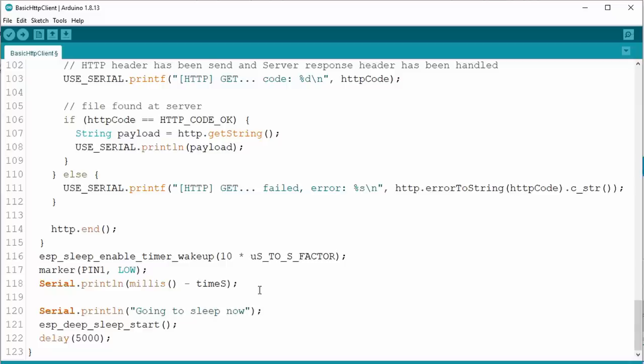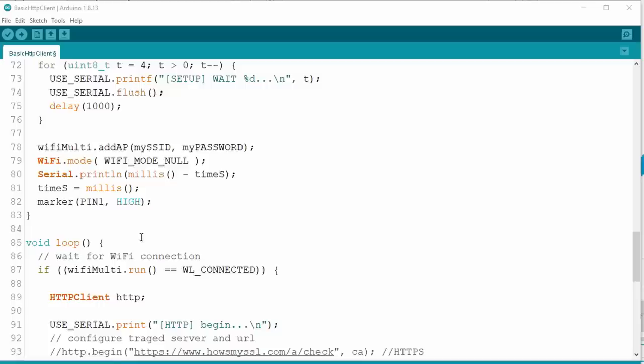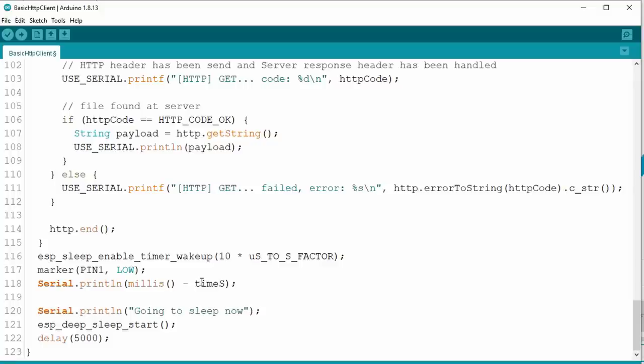I set the pin to high after setup and to low again after getting the answer from the Internet page. Now we can see where the sketch is and can measure the different times without a serial connection and see where the sketch draws which current.